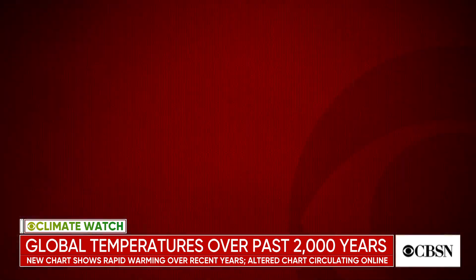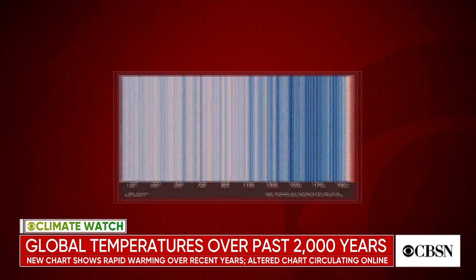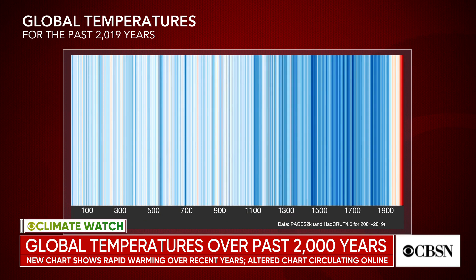Have you ever wondered what the temperatures were the year Jesus was born or when Leonardo da Vinci started painting the Mona Lisa? Well, there's a chart for that now. The new visualization that looks back 2,000 plus years gives an estimate year by year of what the average global climate was.